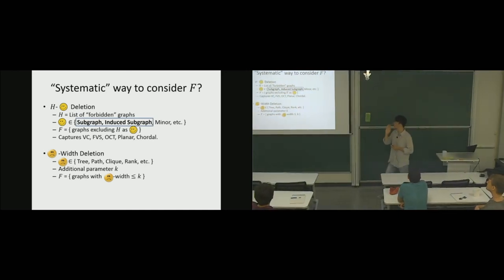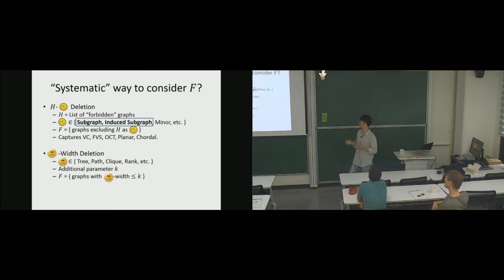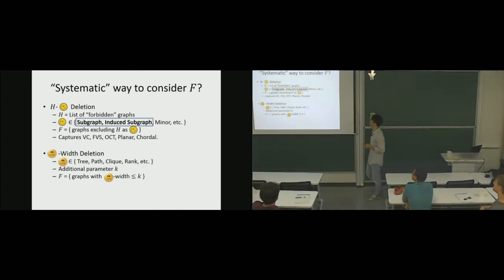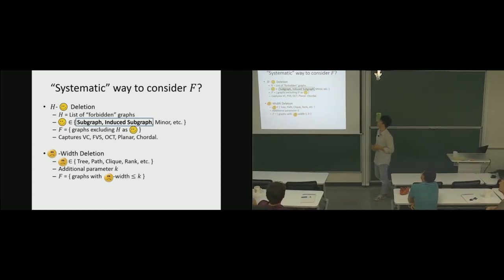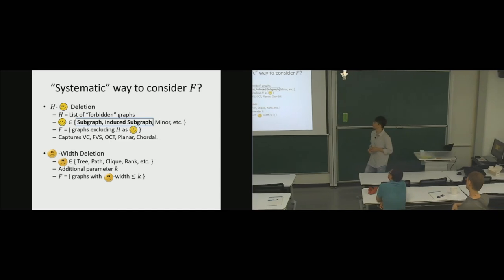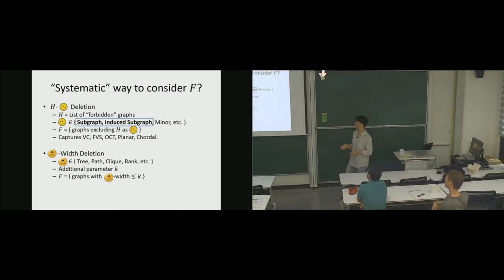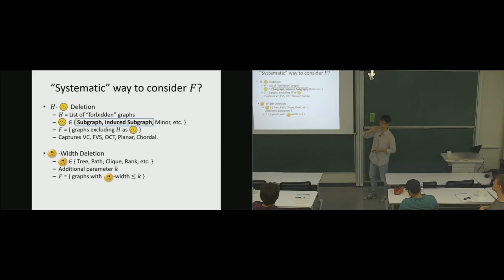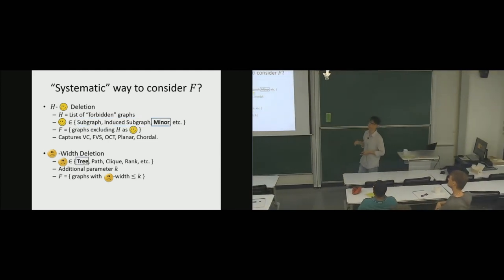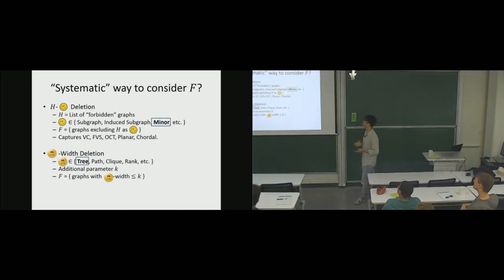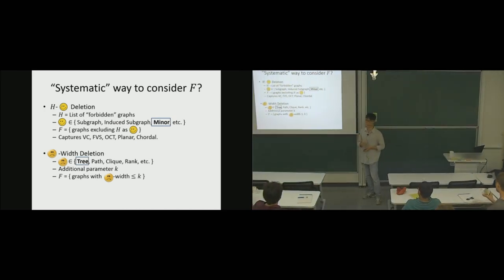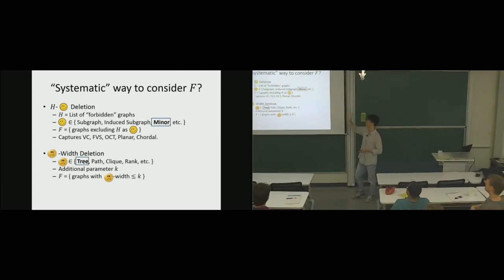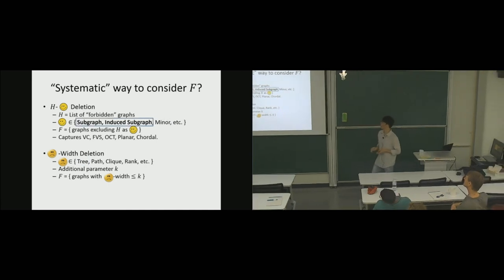As a community we don't understand this problem very well, but first I'll talk about the case when smiley is subgraph or induced subgraph and H is finite — that's where my initial interest came from, and it's more related to traditional approximation literature. Then I'll naturally proceed to the more interesting case of H-minor deletion or reducing treewidth.